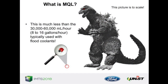To give a graphic sense of how small 'minimum quantity' really is: think of Godzilla — the original Japanese Godzilla, the smallest — representing flood coolant at around 30,000 to 60,000 milliliters per hour. MQL is the little ladybug at the bottom, down around 50 milliliters per hour. So when we say minimum quantity, we truly mean a very, very small amount of fluid.